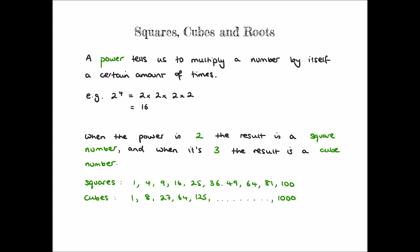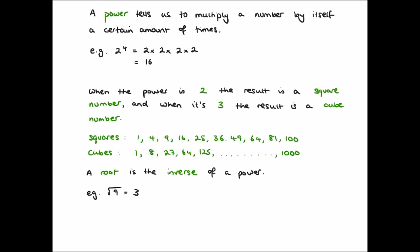The squares and cubes that you need to be able to easily recall are listed here. Now, the reason that it's useful to be able to recognize and quickly recall these is because you also need to be able to find the roots, and a root essentially reverses the power. The mathematical word for this is the inverse. So, for example, the square root of 9 written as shown is 3, since 3 squared is equal to 9. Similarly, the cube root of 64 is 4, since 4 cubed is equal to 64.